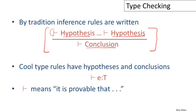There's one piece of new notation here—the turnstiles used for the hypotheses and the conclusion. The turnstile is read 'it is provable that.' We're saying explicitly that something is provable in the system of rules we are defining.